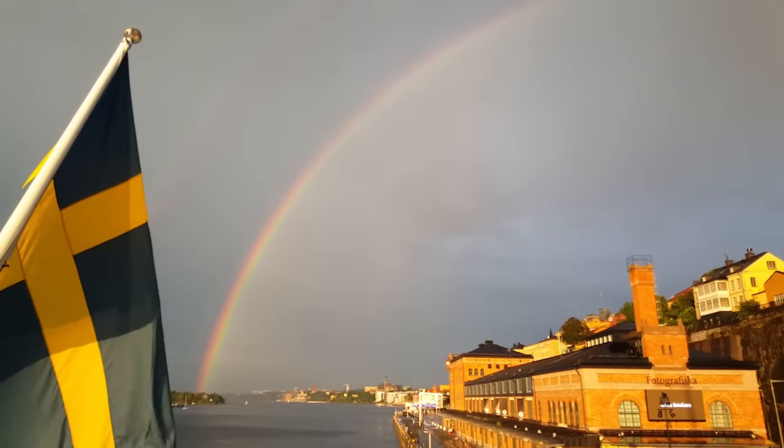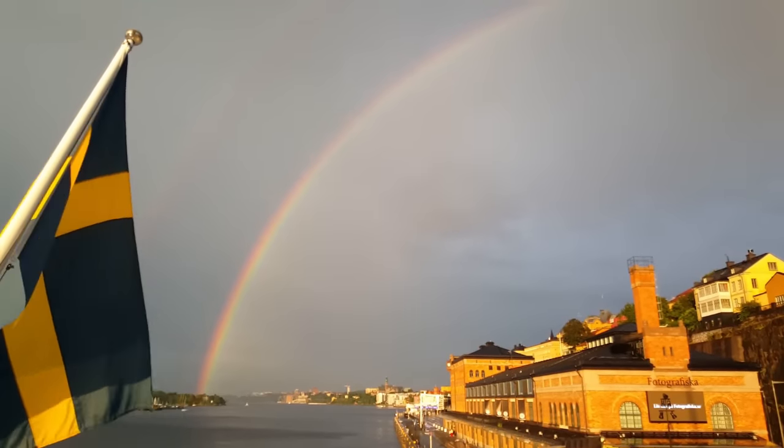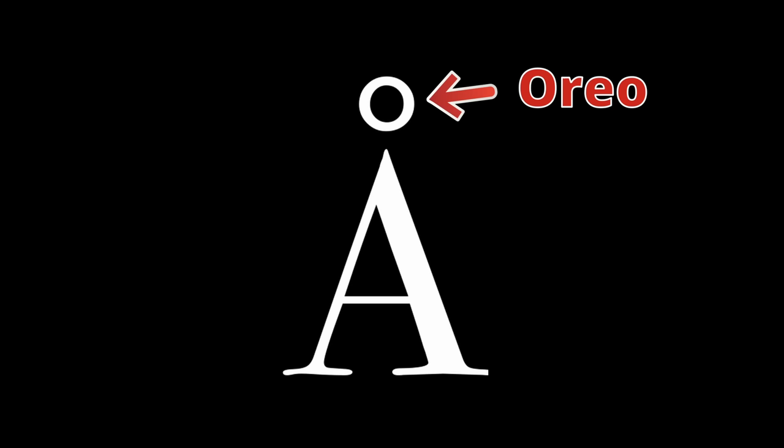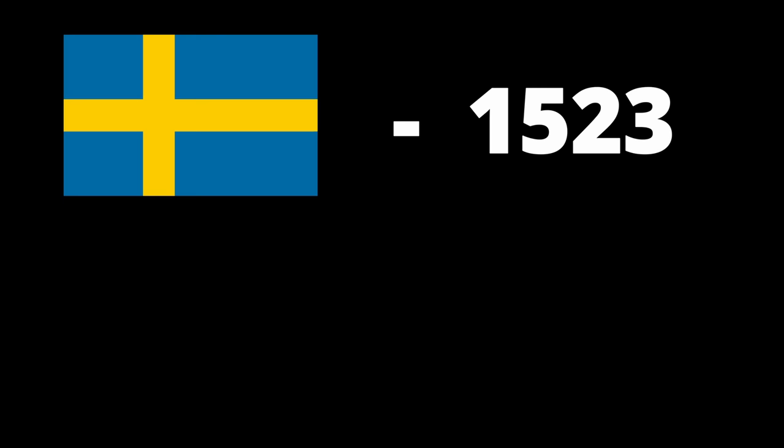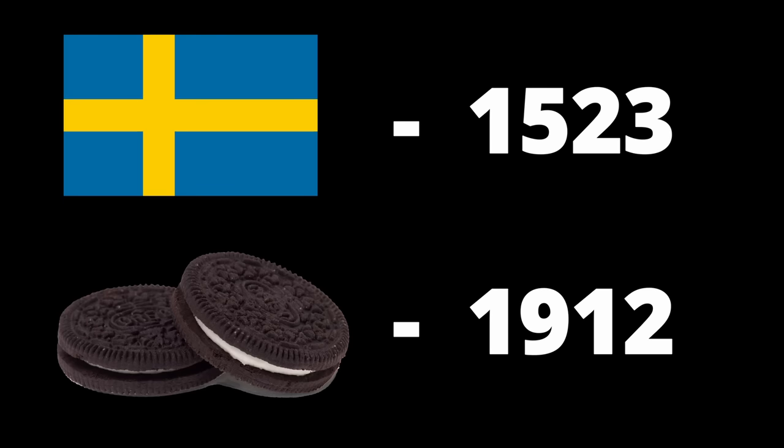Other Germanic alphabets have similar problems. The Swedes have two double-dot letters, as well as this A with an Oreo on top of it, which is mind-blowing because Sweden was released in 1523 while Oreos weren't dropped until 1912.